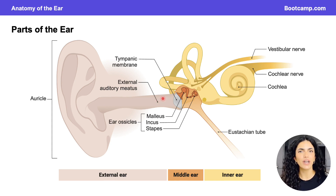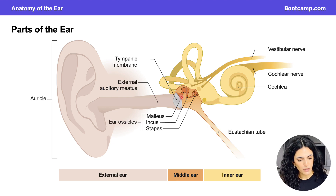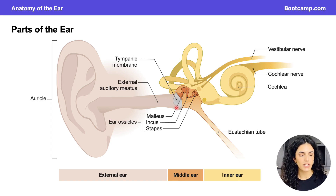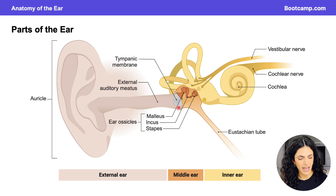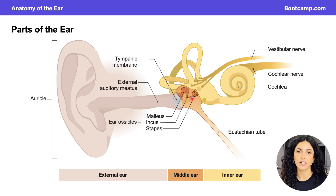The auricle and the external acoustic meatus are both portions of the external ear. The tympanic membrane — the eardrum — is what separates the external ear from the middle ear. On the lateral side of the tympanic membrane we have the external ear, and on the medial side we have the middle ear.